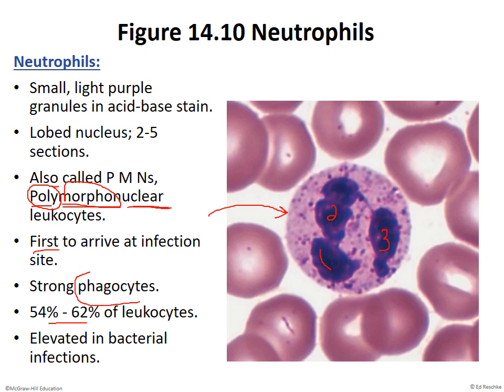Neutrophils are phagocytic cells — they're like Pac-Man. When an invader comes in trying to do harm, the neutrophil comes along, engulfs it, digests it, gets rid of it. There's one other type of white blood cell that's a phagocyte — the monocyte, which we'll talk about in a second. Neutrophils are elevated in bacterial infections — that's a big one to know.